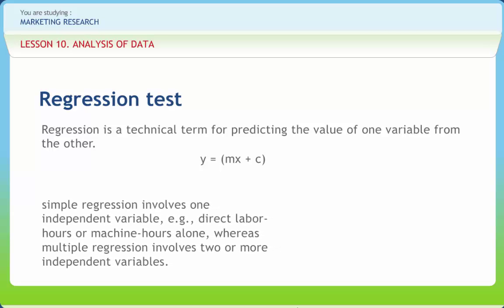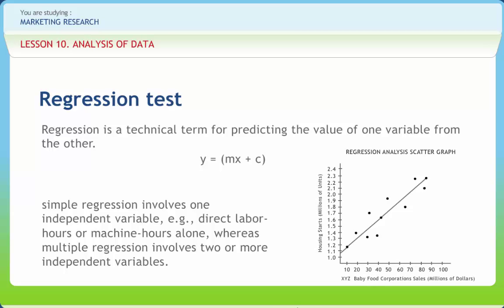A best prediction equation is determined from the set of independent variables. Simple regression involves one independent variable, e.g., direct labor hours or machine hours alone, whereas multiple regression involves two or more independent variables. In estimating the cost-volume formula, regression analysis attempts to find a line of best fit. To find the line of best fit, a technique called the least squares method is widely used.